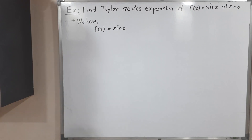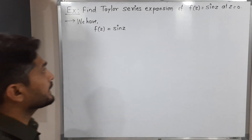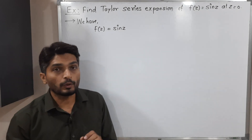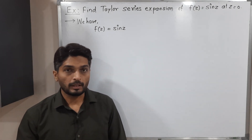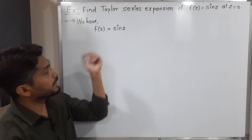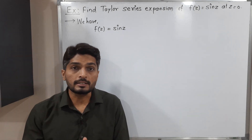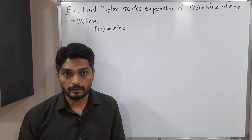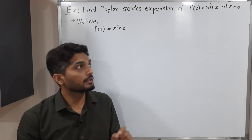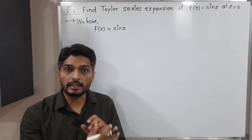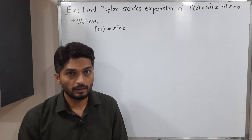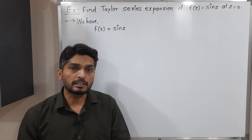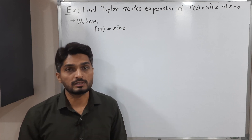Hi everyone. In this video we are going to find the Taylor series expansion of the function sin(z) at point z equal to 0. So I have already mentioned the given function. Taylor series expansion can be found if the function is analytic around that point, which is 0. It should be analytic in a neighborhood of 0. But sin(z) is an entire function, meaning it is analytic everywhere on C.